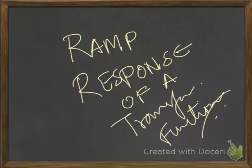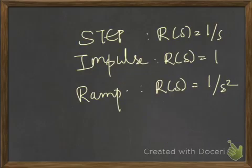Hello everyone. In this video, let us learn how to find the ramp response given a transfer function. Before I start, let me tell you that the R(s) value for unit step response is 1/s, for unit impulse response R(s) is 1, and for unit ramp response R(s) is 1/s².